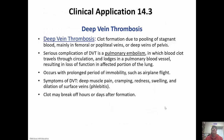Deep vein thrombosis is clot formation due to pooling of stagnant blood. It often happens in the femoral or popliteal veins or the deep veins of the pelvis, and occurs if you are not moving for a very long time, or because the valves in the veins get weakened. A serious complication is pulmonary embolism — the blood clot dislodges, travels through circulation, and lodges in a pulmonary blood vessel, blocking whatever portion of the lung it supplies. It occurs with prolonged immobility, like an airplane flight. Symptoms include deep muscle pain, cramping, swelling, redness, and dilation of the surface veins. The clot can break off hours or days after formation.